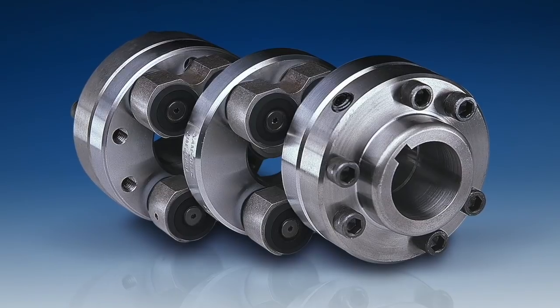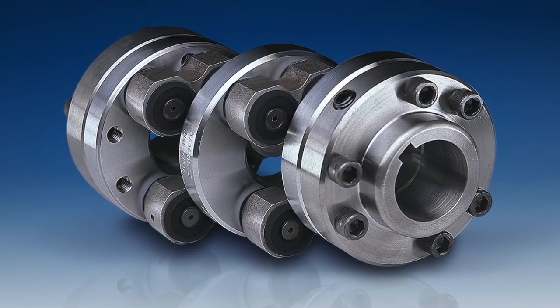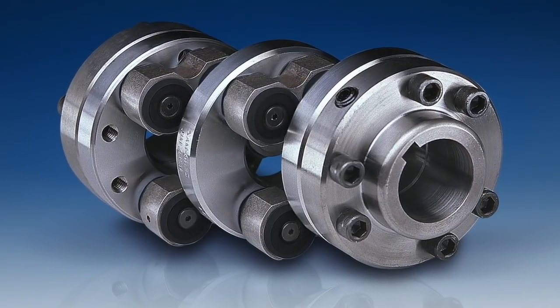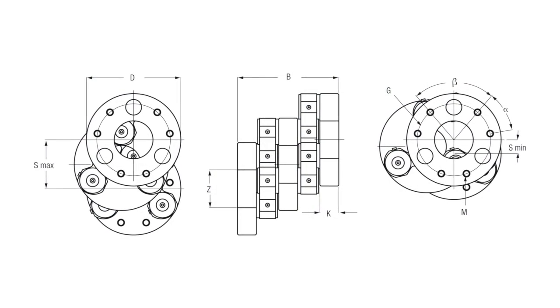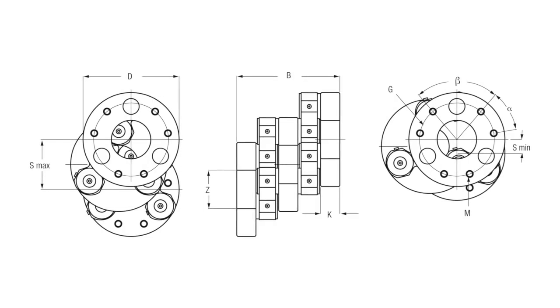Schmidt offset couplings allow large variable parallel offset between two shafts and they adapt well to wide variations in radial displacement while running under load. Schmidt couplings ensure a true phase relationship of input and output rotation at all times.